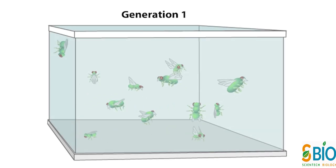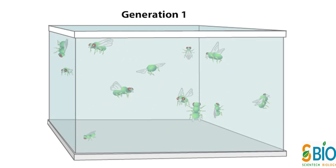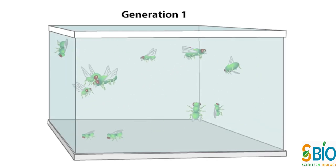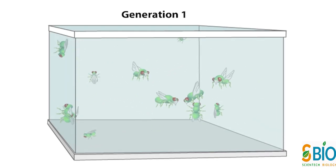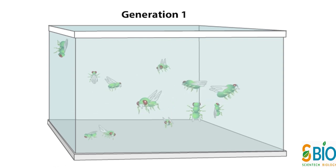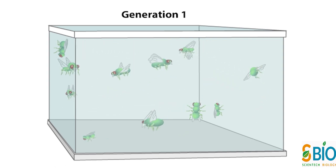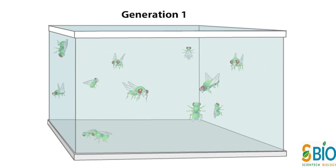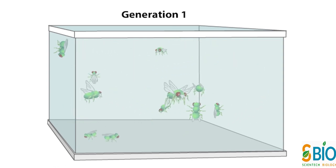Laboratory Organisms या Field Studies के प्रयोगों को Design करके हम एक पीढ़ी से दूसरी पीढ़ी तक बहुत छोटे पैमाने पर हो रहे Evolutions को Demonstrate कर सकते हैं।